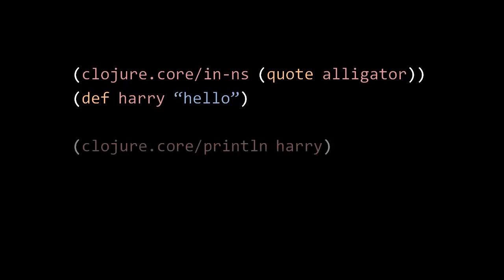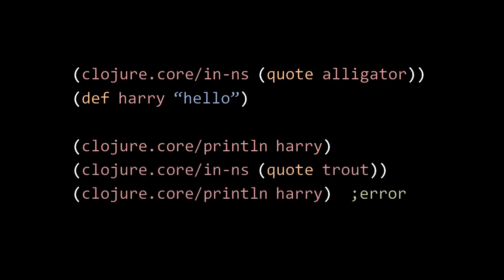Next we call the standard library function println in the namespace Clojure.core, and we specify the argument harry, so we're going to print whatever is in harry, and because we're still in the namespace alligator, harry here is automatically going to resolve to harry in the namespace alligator. However, let's say we next switch to another namespace, which we call trout, and then we try and make the same call to println, harry is not going to resolve to alligator slash harry, it's going to resolve to trout slash harry. And assuming trout has no symbol in it of that name, then we're going to get an error. The evaluator is going to throw an exception. So that's what it means to be in a current namespace, and that's how we switch between current namespaces.